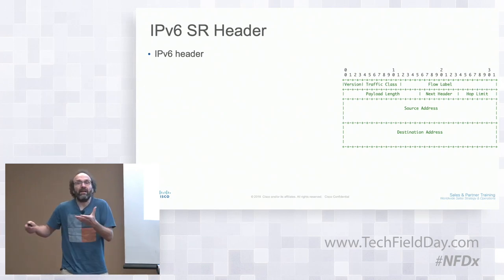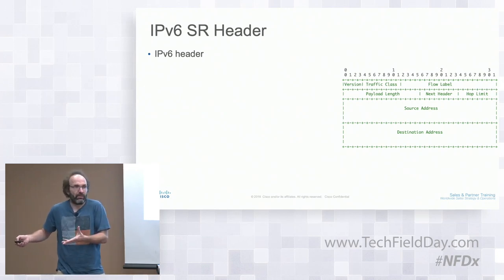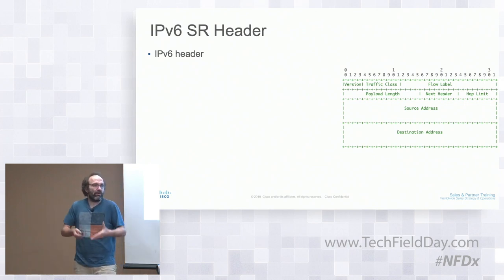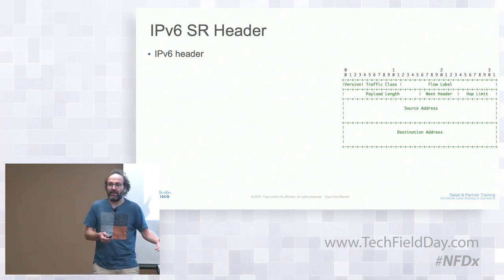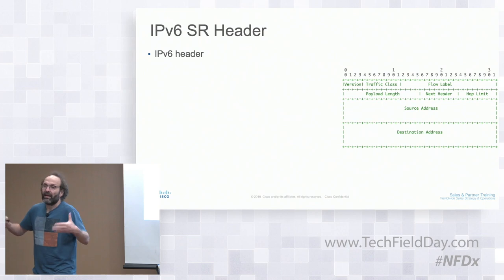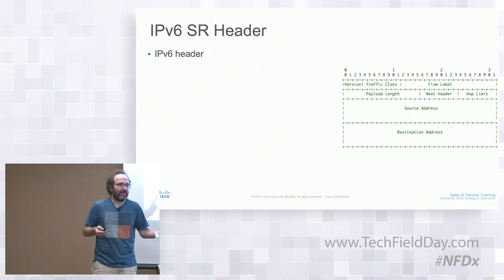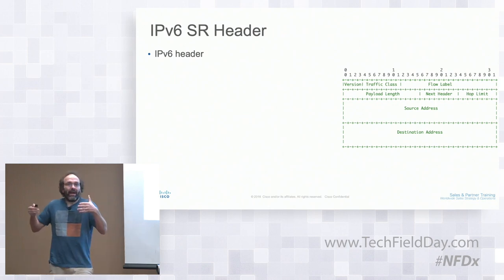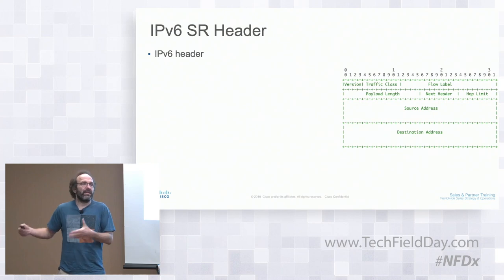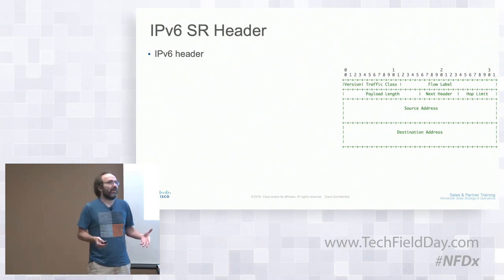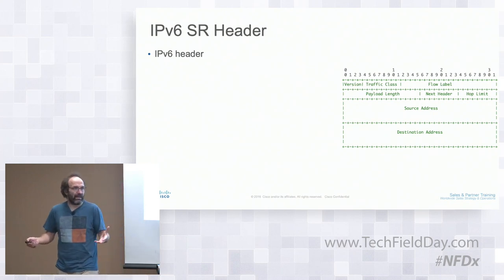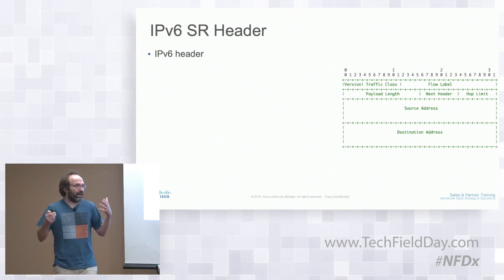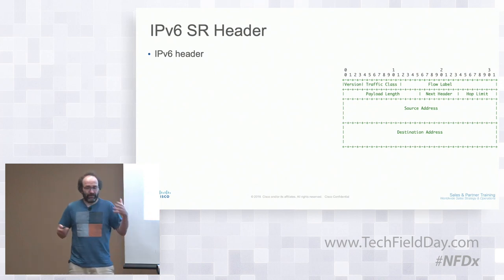Segment routing is the same concept, but we need to encode the segments not in MPLS but in something else—an IPv6 address format, though it's slightly different from a true IPv6 address. All packets in the SRV6 network will be IPv6 packets; there is no MPLS header. Everything is just IPv6.